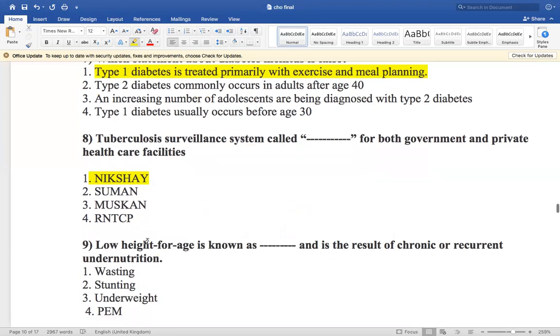The next question is: low height for age is known as dash and it is the result of chronic or recurrent undernutrition. Wasting, stunting, underweight, or protein energy malnutrition. So it is stunting.